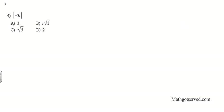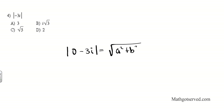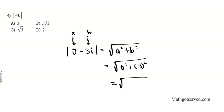Let's move on to number 4: the absolute value of negative 3i. This one is a little bit tricky — we do not have a real part. Since we do not have the real part, we use 0 as a placeholder, giving us 0 minus 3i. Applying the Pythagorean theorem, we get the square root of 0 squared plus negative 3 squared, which gives the square root of 0 plus 9, which is the square root of 9. The square root of 9 is 3, so the answer to number 4 is 3.